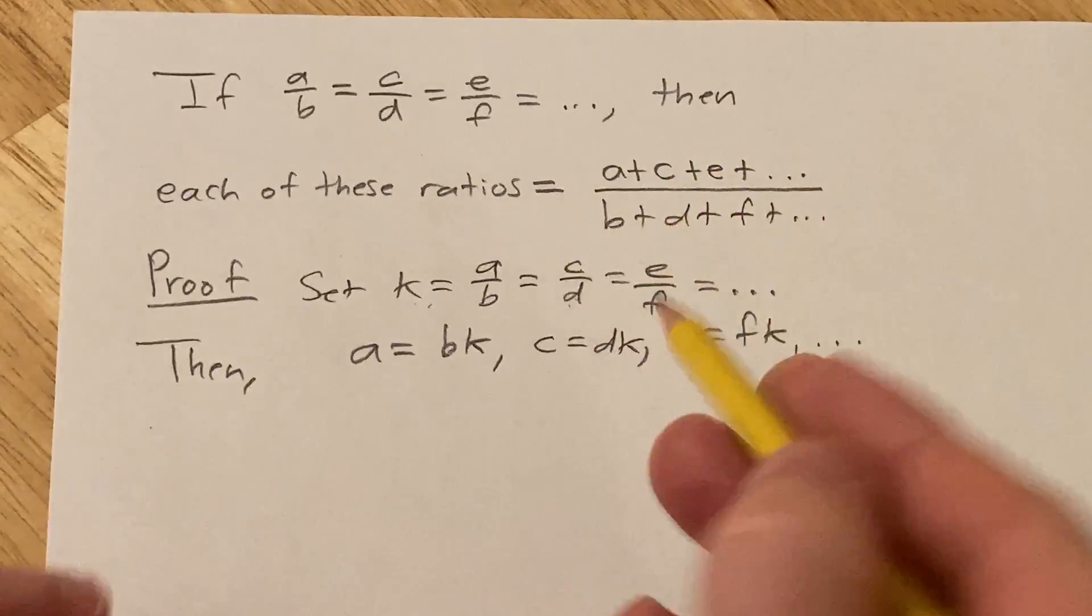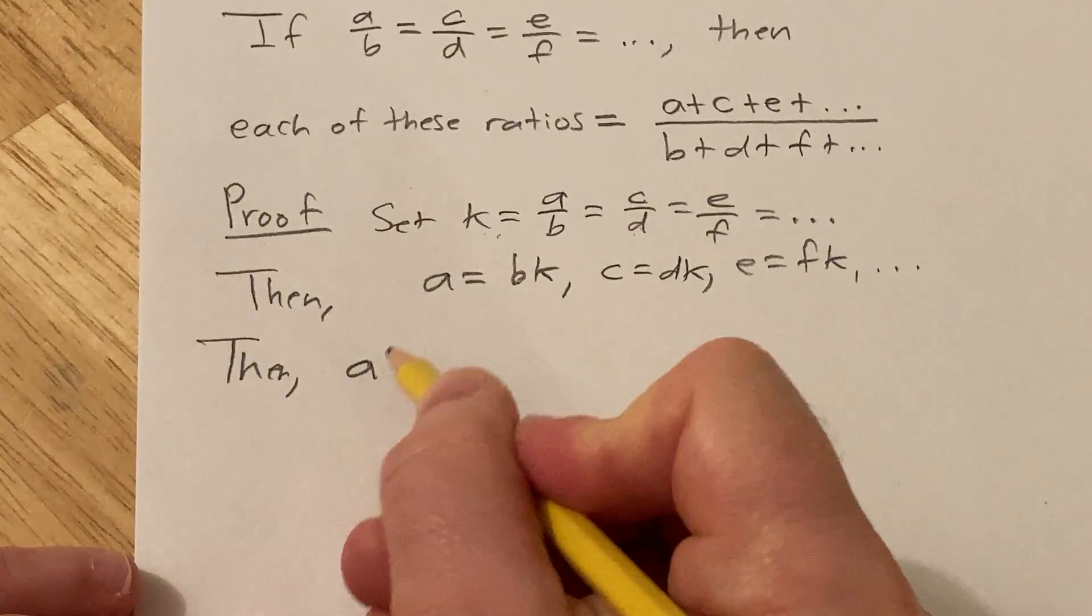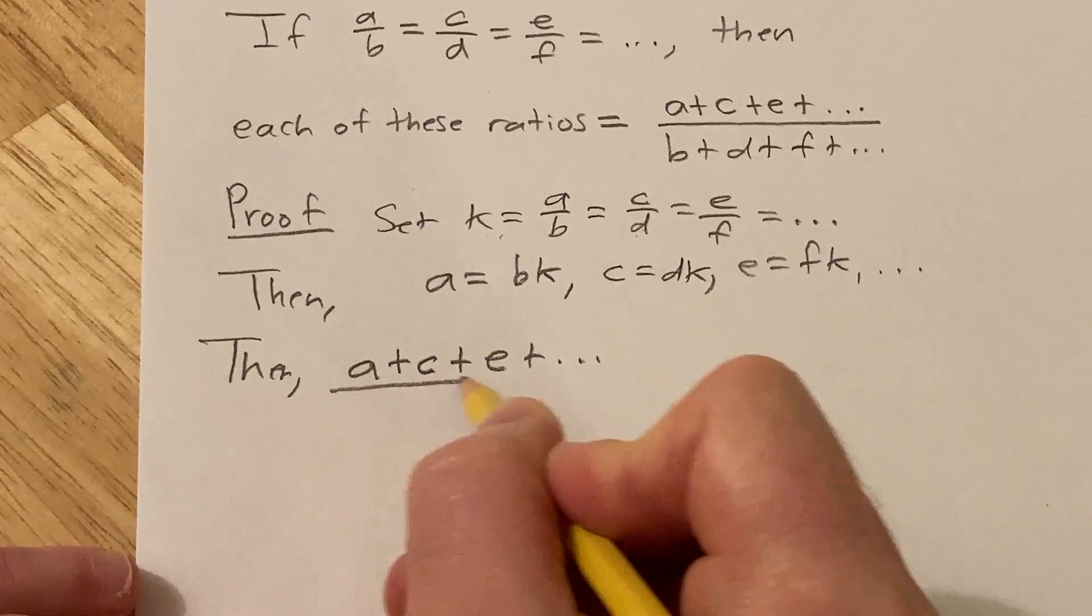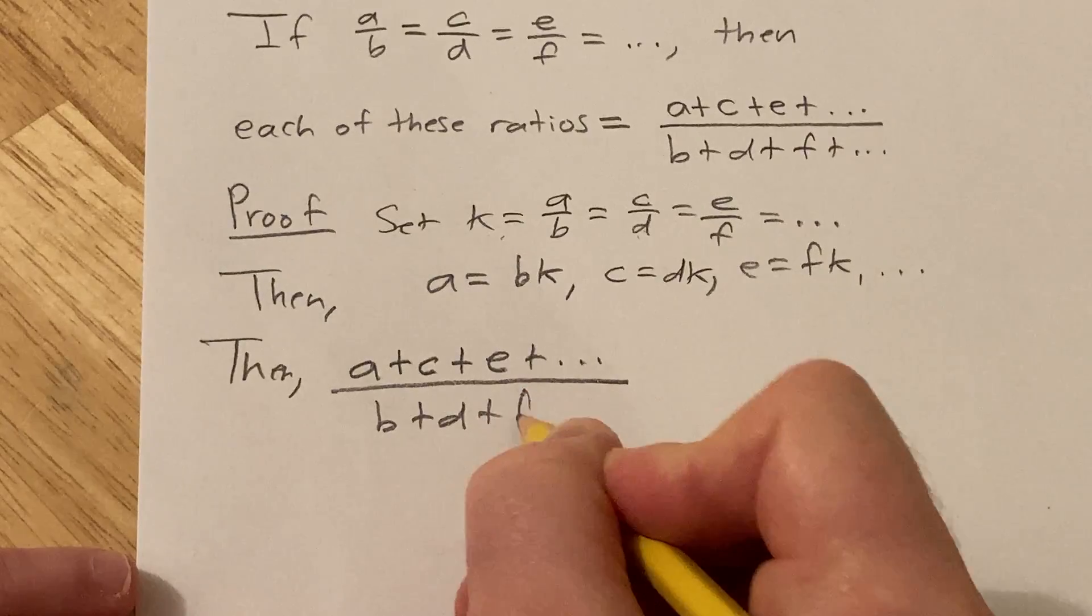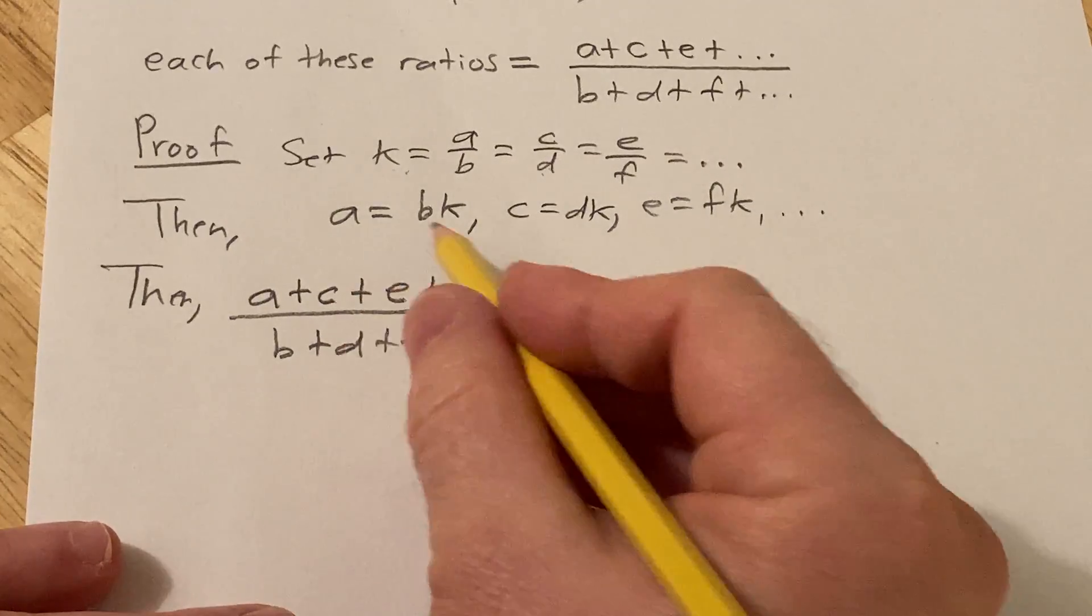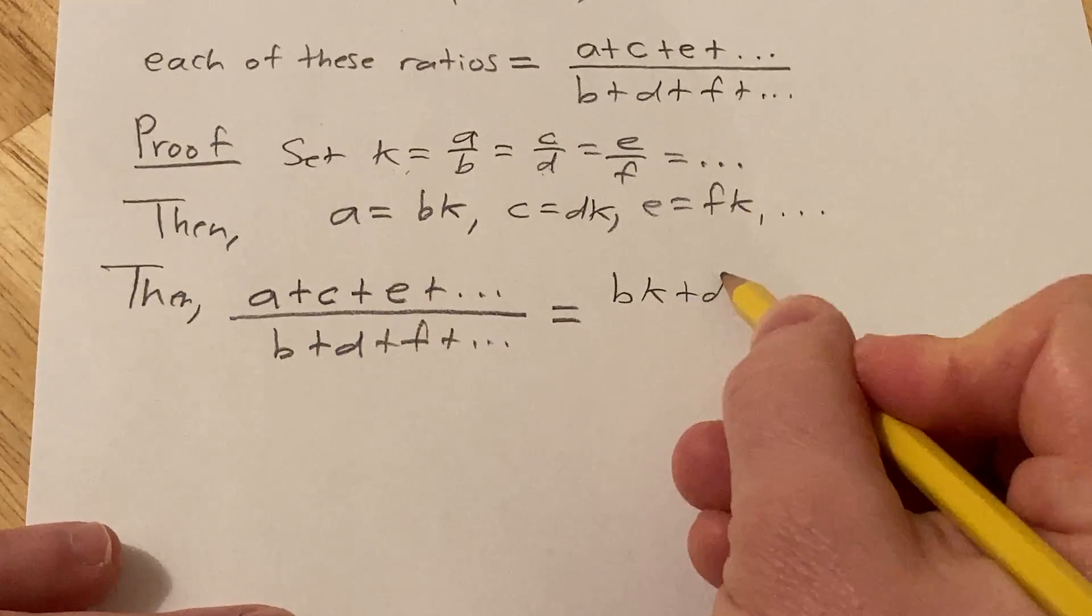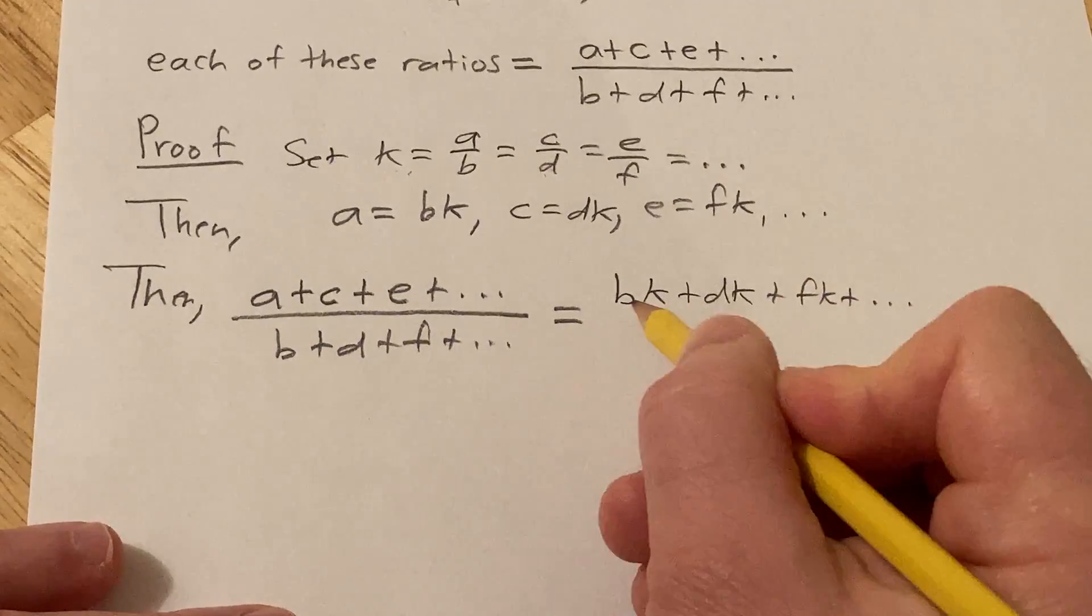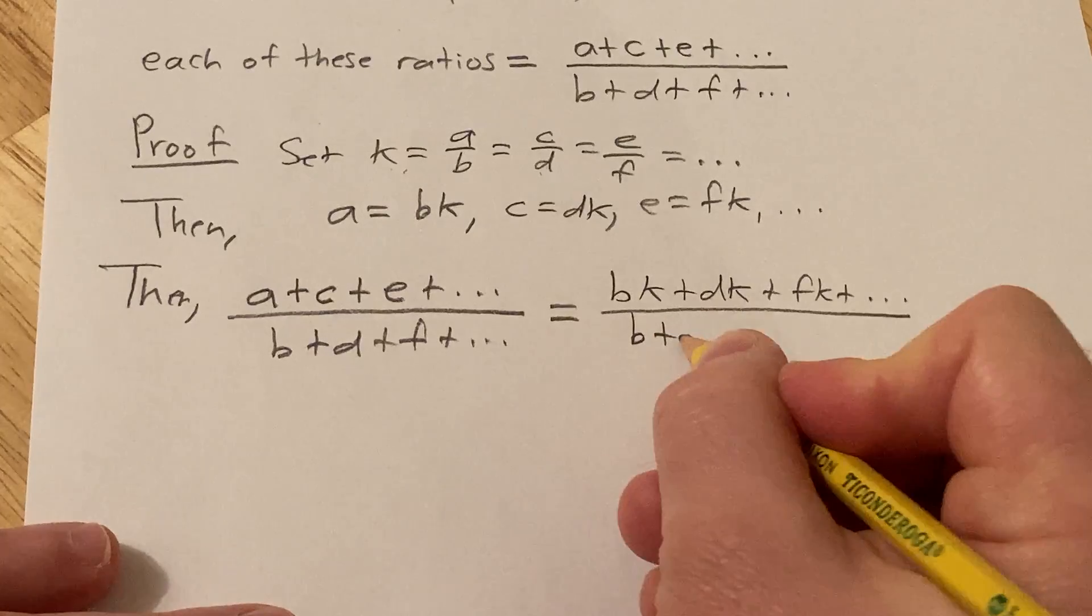And then now let's go ahead and write this down. So then we have a plus c plus e plus... over b plus d plus f. All right, so a is bk. Pretty cool, right? And then c is dk. And then e is fk.